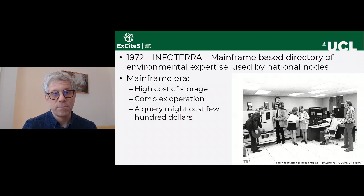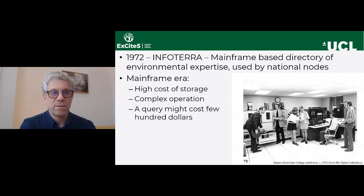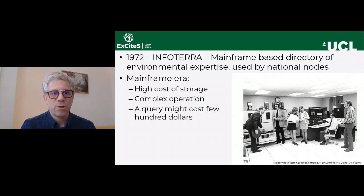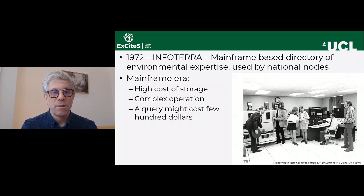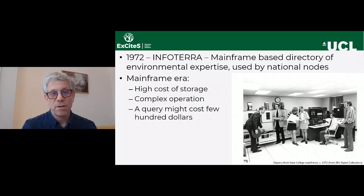Shortly after the Stockholm conference, the first environmental information system at the global level was created — called InfoTerra. It was a mainframe-based directory of environmental expertise used by national nodes. It ran as a system that included all sorts of data, but basically not the data itself — more the names and contact details of who you could reach about it. At this time, storage was very expensive, operations were complex, and running a query on this system could cost a few hundred dollars.